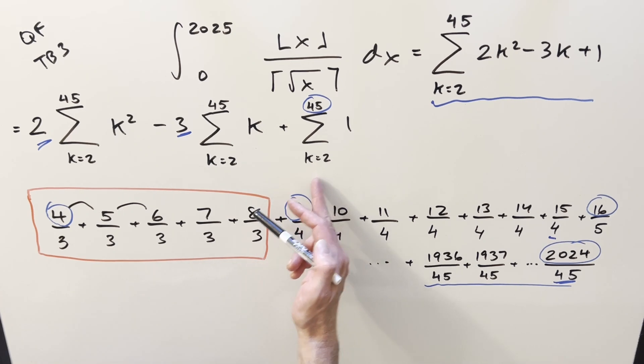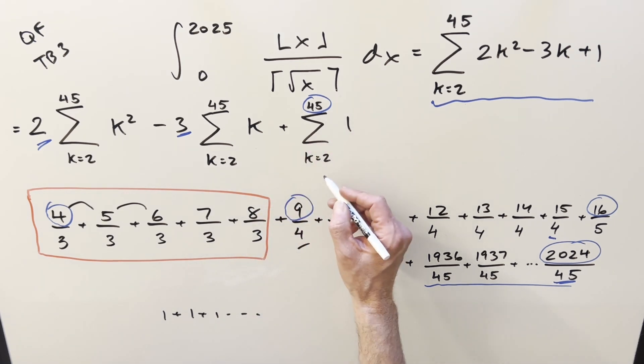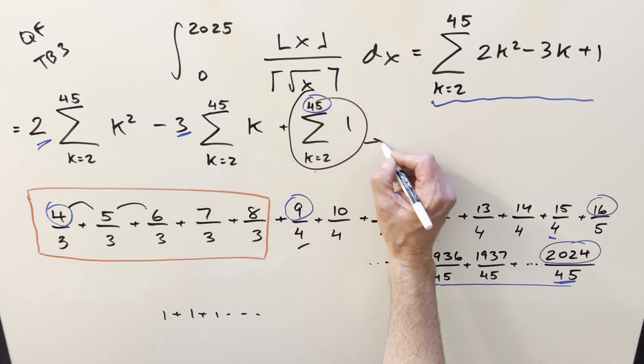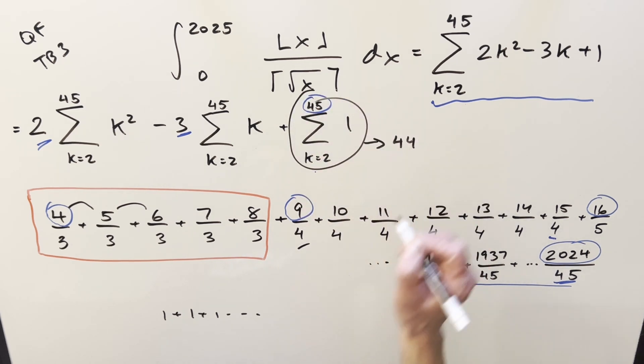Okay, so now going in to calculate this, we'll start with the right because it's the easiest. Just adding up 1s. So, that sometimes can be a little confusing, but we're adding, it's just 1 plus 1 plus 1 all the way to 45. The only thing you need to keep in mind is we're starting at 2. If it started at 1, this would be 45. But because we're starting at 2, this value is going to be 44 right here.